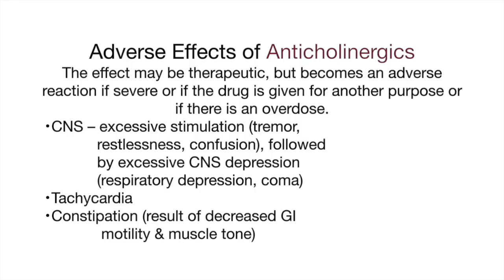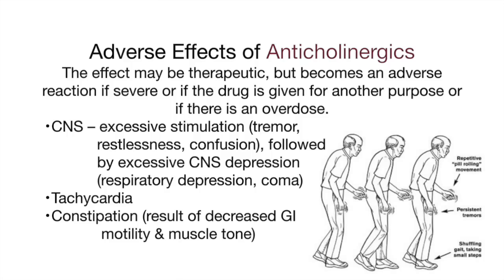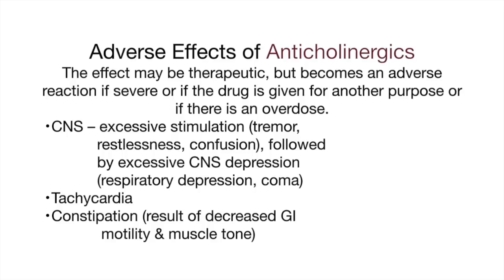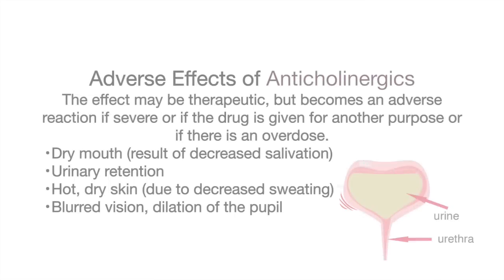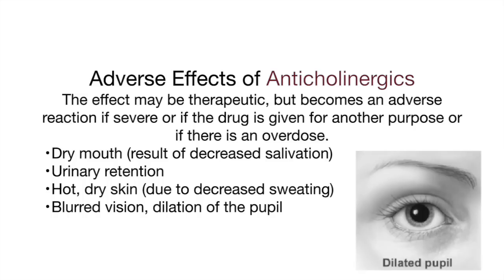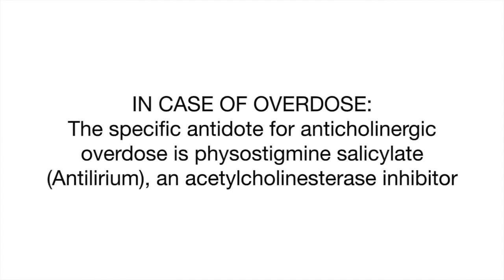On the central nervous system, anticholinergics can cause excessive stimulation such as tremor, restlessness, or confusion, followed by excessive CNS depression, respiratory depression, and coma. They can also cause tachycardia, constipation, dry mouth, urinary retention, hot dry skin, and blurred vision from dilation of the pupil, so the patient may need to wear sunglasses. The specific antidote for anticholinergic overdose is physostigmine salicylate, or Antilirium, an anticholinesterase inhibitor.